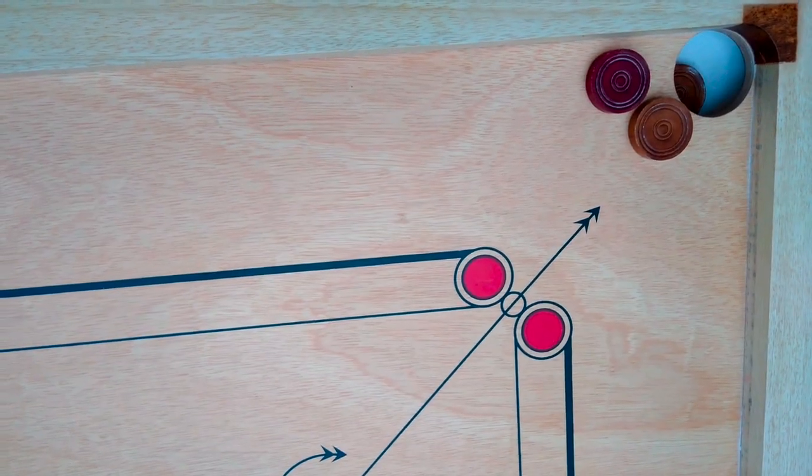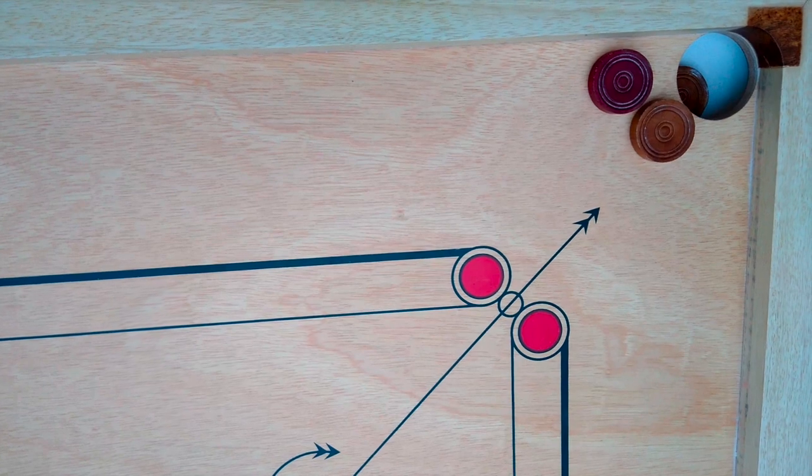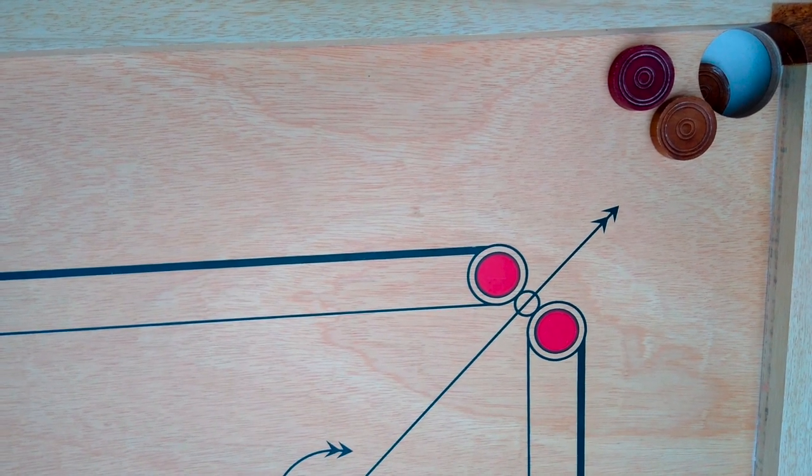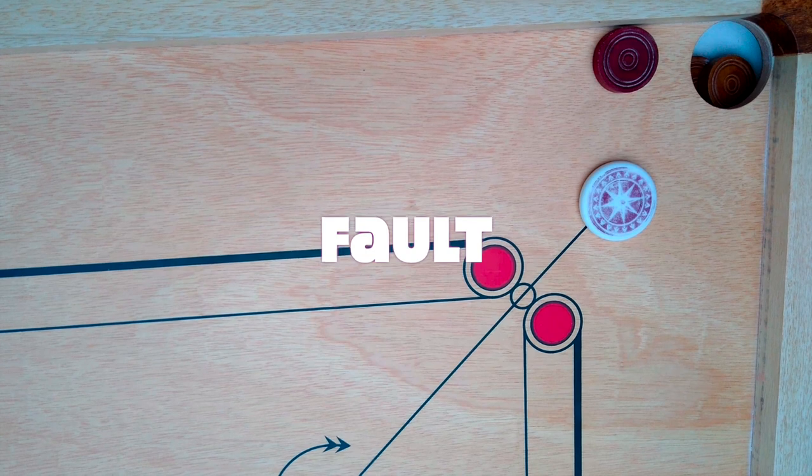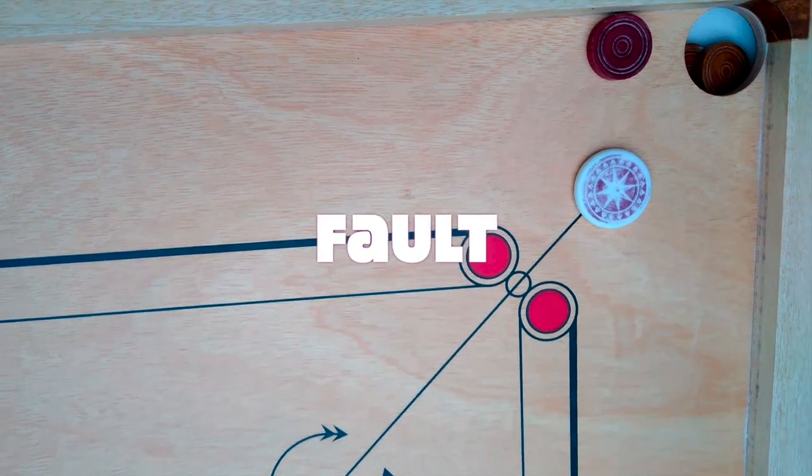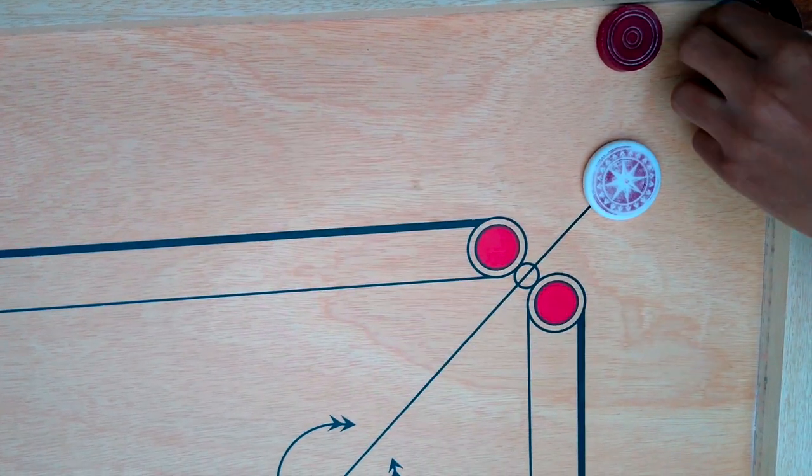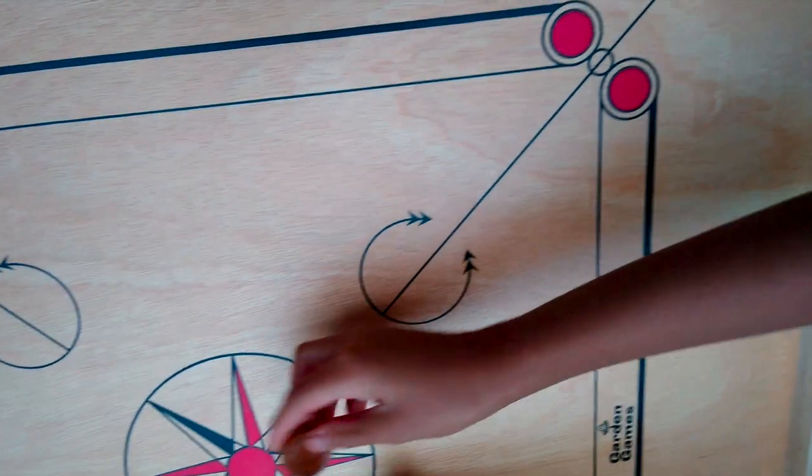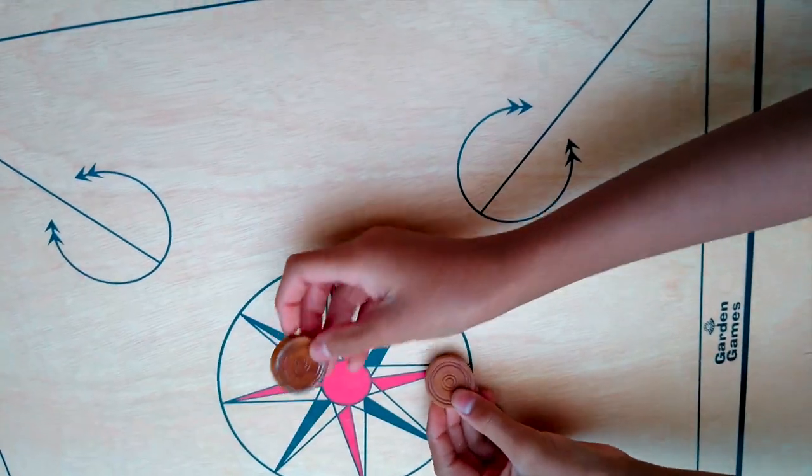It's illegal to put the queen after the last piece since the queen must always be covered. That is illegal, so that player gets a penalty. You put two discs in the middle circle wherever you want.